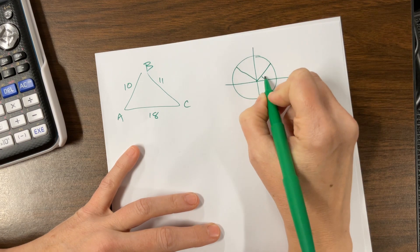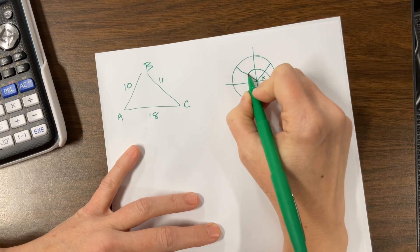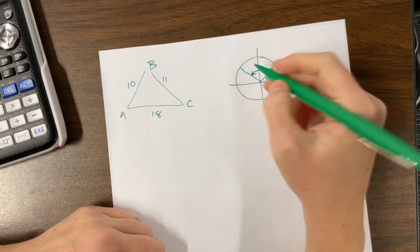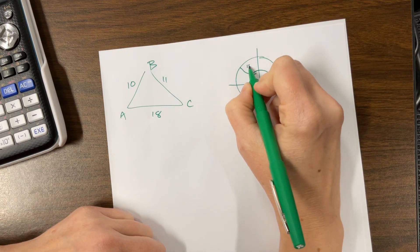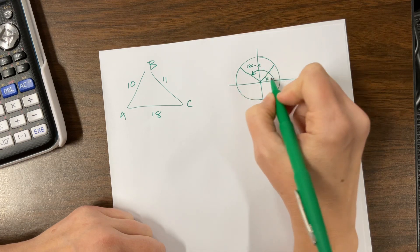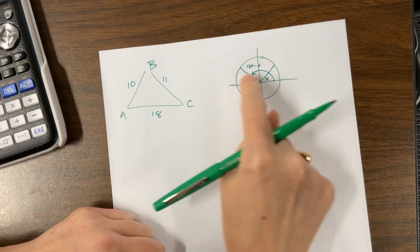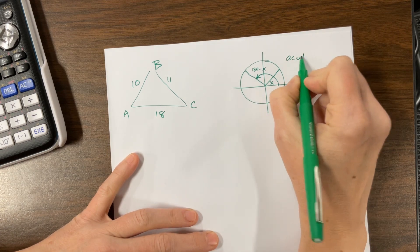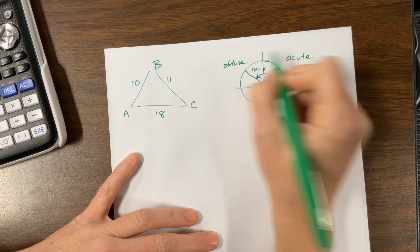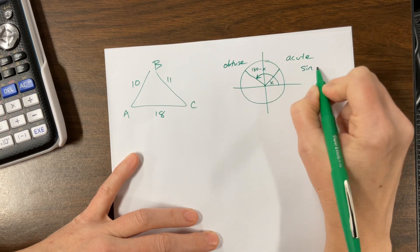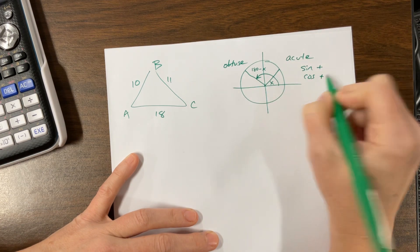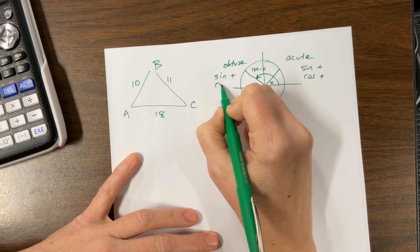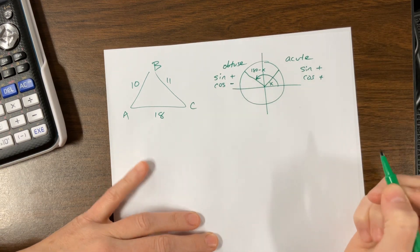So you could think pi minus X, except in this world I tend to think in degrees. So this is 180 minus X. This acute angle and this obtuse angle, okay, so in this quadrant we're acute, in this quadrant we're obtuse. In quadrant one, sine is positive and cosine is positive. In quadrant two, sine is still positive, but cosine is now negative.